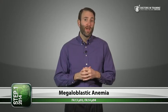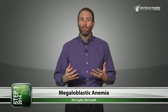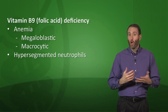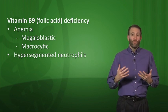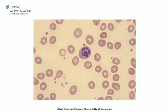Megaloblastic anemia is an anemia where the RBCs are very large — a type of macrocytic anemia. It is characterized by an elevated number of megaloblasts found in the marrow. Under the microscope you often see hypersegmented neutrophils alongside large RBCs. The other vitamin deficiency leading to megaloblastic anemia is vitamin B12.